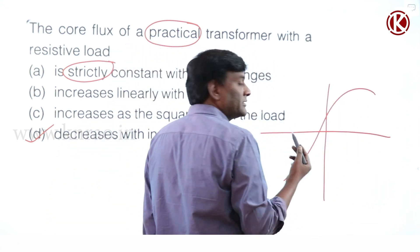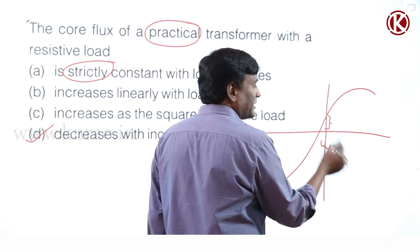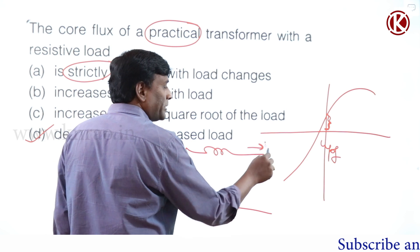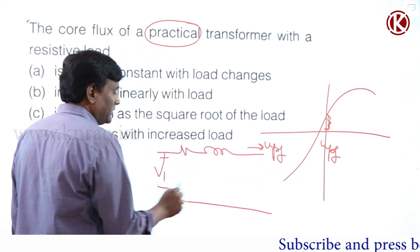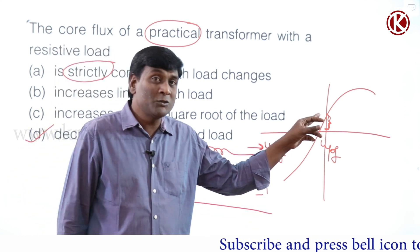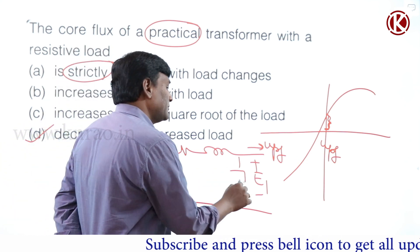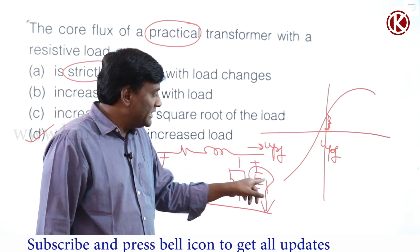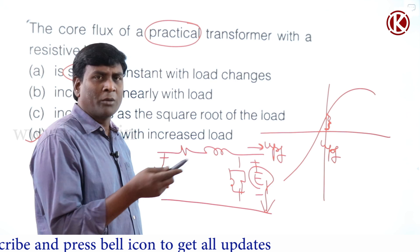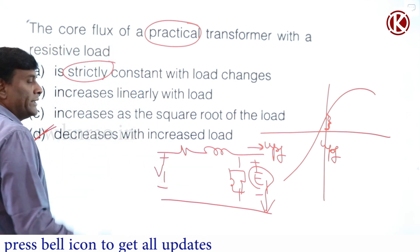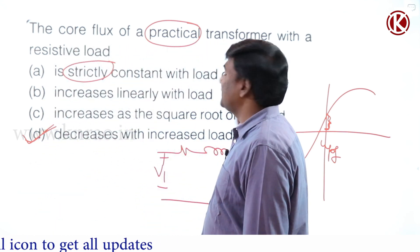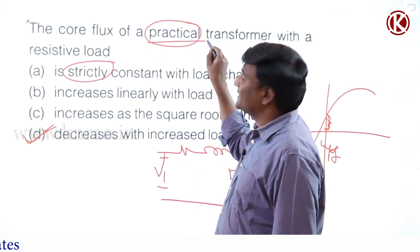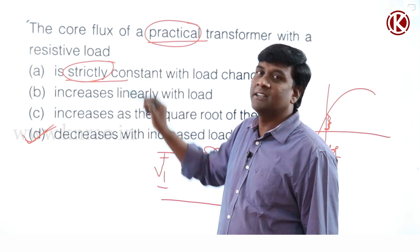We have seen the voltage regulation characteristic. At unity power factor, voltage regulation is positive. If it is operating at unity power factor with V1 and E1, and voltage regulation is positive, then compared to V1, E1 value will be less. As load current magnitude increases, E1 keeps reducing; as E1 reduces, E1 by F reduces and operating flux reduces. So 'decreases with increased load' is correct. We should not say it is strictly constant with load changes — those variations are normally neglected in transformer analysis, but the core flux is not strictly constant.